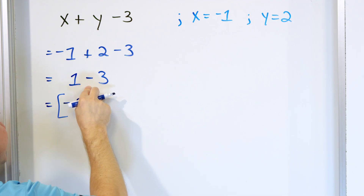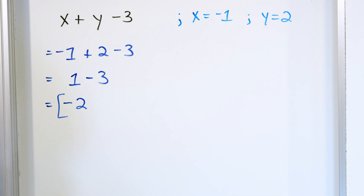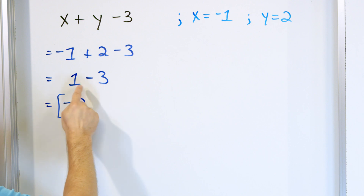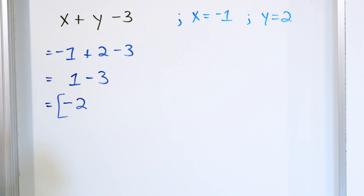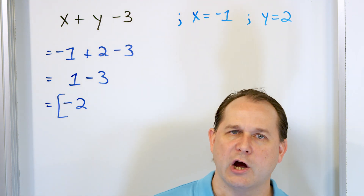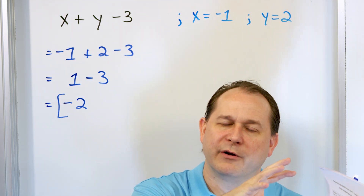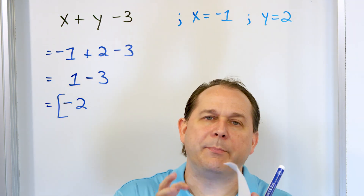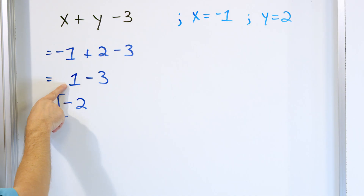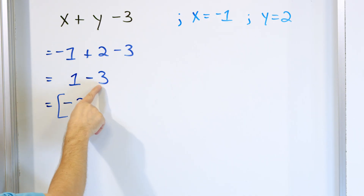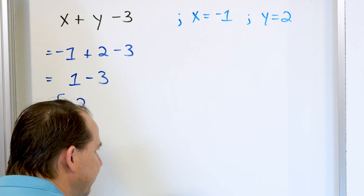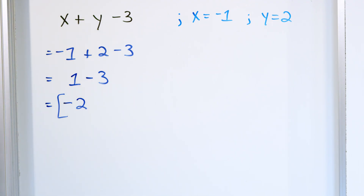Then you still have to do that minus 3. Going left to right, we did the addition first and got positive 1. Now what is 1 minus 3? You can think of it as 1 plus a negative 3, and that gives an answer of negative 2. In algebra, even if the first number is smaller, you subtract as usual — 3 minus 1 is 2 — but when it's backwards like this, you put a negative sign on the front. So the answer is negative 2.